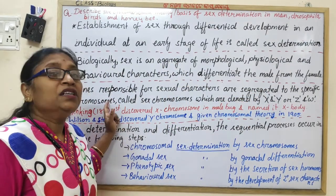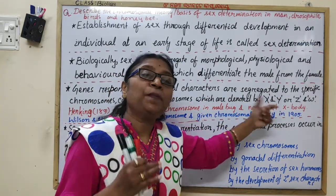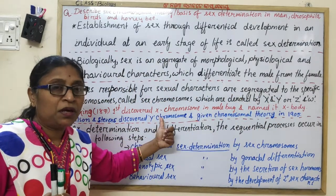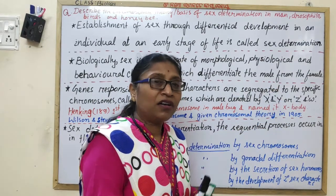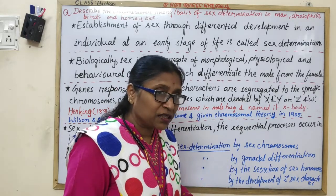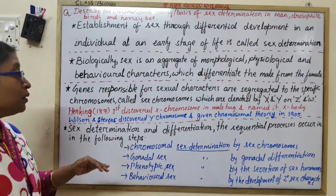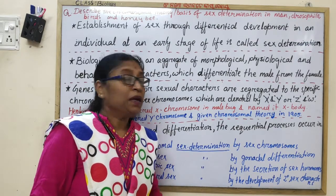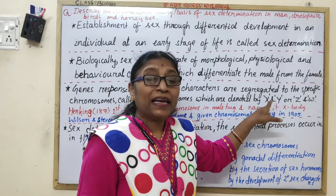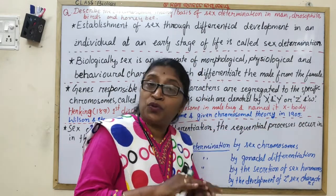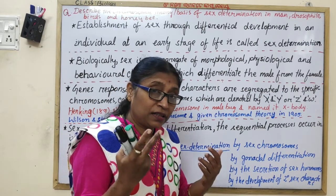Then you have to write down: genes responsible for the sexual characters are segregated to specific chromosomes called sex chromosomes, which are generally denoted by X and Y, or Z and W in diploid organisms. Z and W are replacements of X and Y used to prevent confusion.